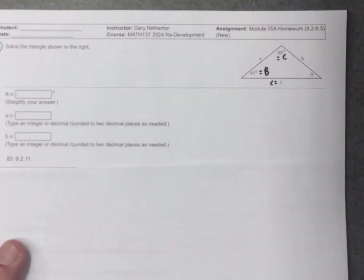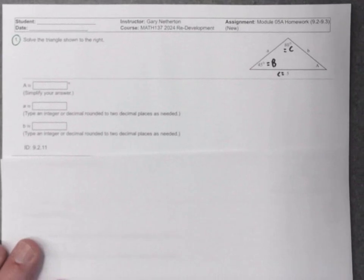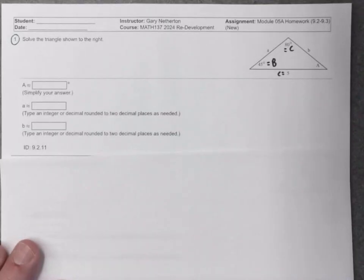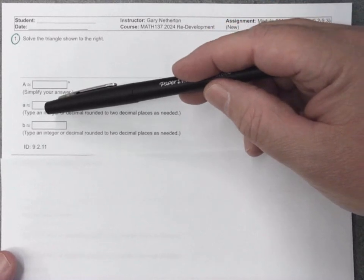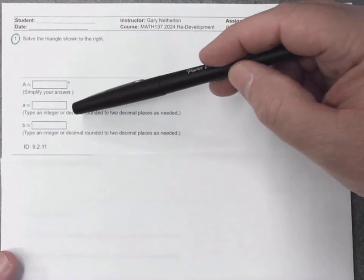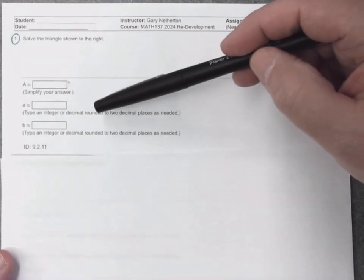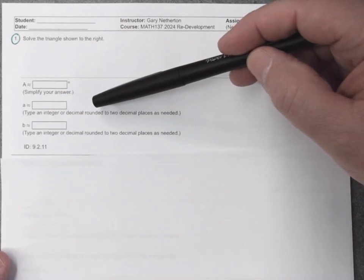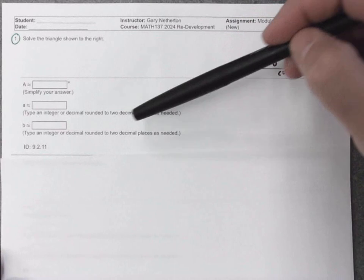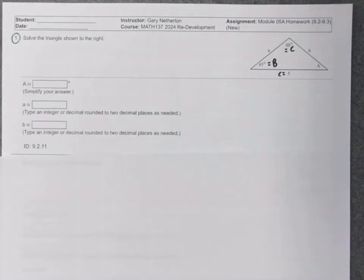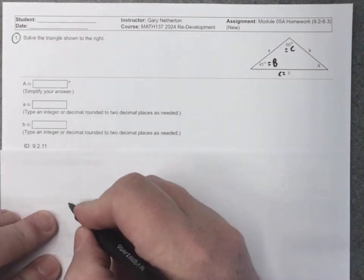Give ourselves plenty of room to work it out. And by the way, here are the three answers we are looking for: angle A, side A, and side B. Now for side A and B, notice they want the answer as a decimal rounded to two decimal places. That means for these problems, we are going to be using a calculator.